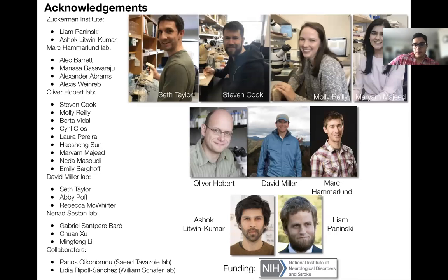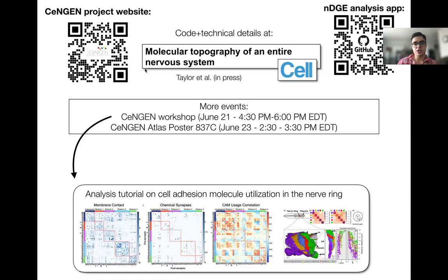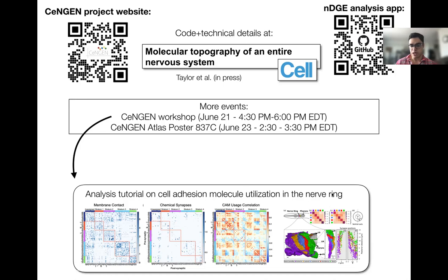I'd like to thank all of my collaborators within the CENGEN project, especially Seth Taylor, who led the efforts in generating the single-cell gene expression atlas, and the PIs Oliver Hobart, David Miller, and Mark Hammerland. I'd also like to thank my computational mentors at the Zuckerman Institute of Columbia and acknowledge our funding sources. Here are QR codes for both the CENGEN project website and the open-source software for our computational tool, which we hope will enable other groups to generate testable hypotheses about molecular codes of connectivity. The CENGEN workshop this afternoon will provide further details about sequencing and a tutorial on using the NDGCE software, including a use case showing how to decode cell fusion and molecular codes of nerve ring organization and connectivity.